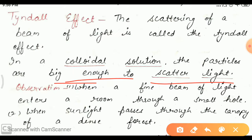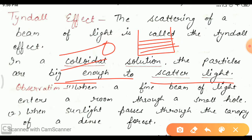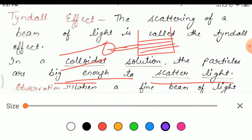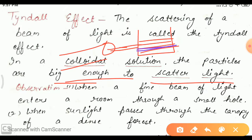If we take a torch and pass the light through a colloidal solution, we can clearly see the path of the light through the solution because there are particles which scatter the light. This was not possible in a true solution because the size of the solute particle is very small.